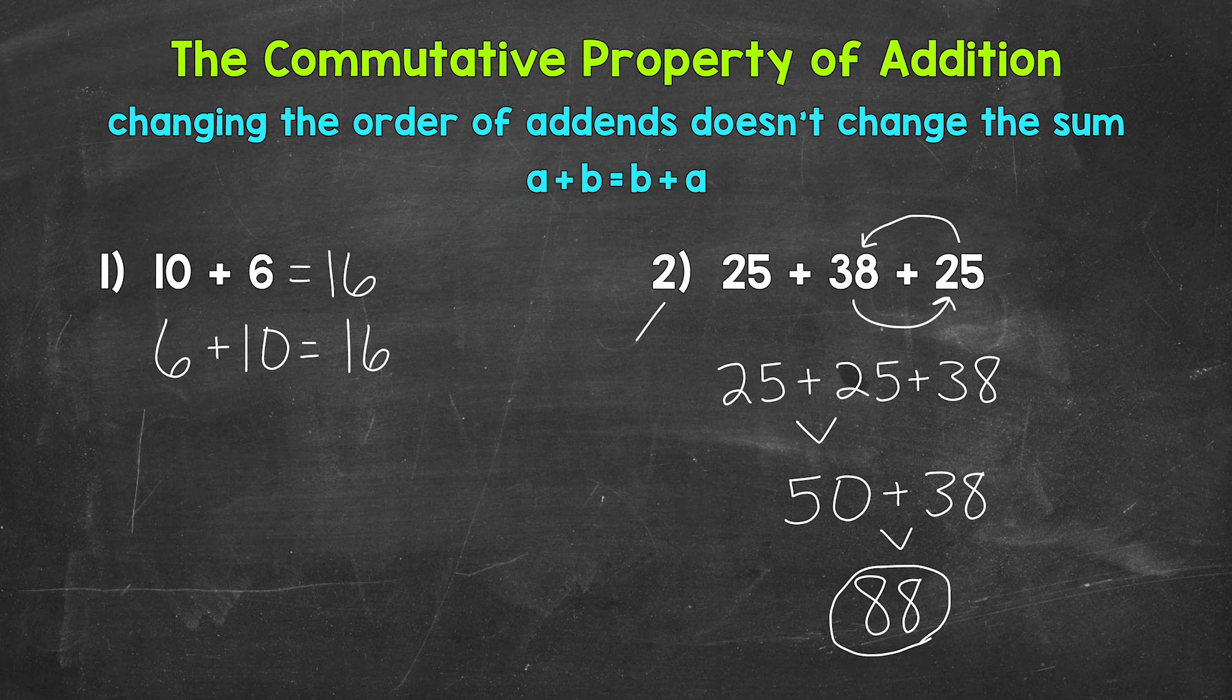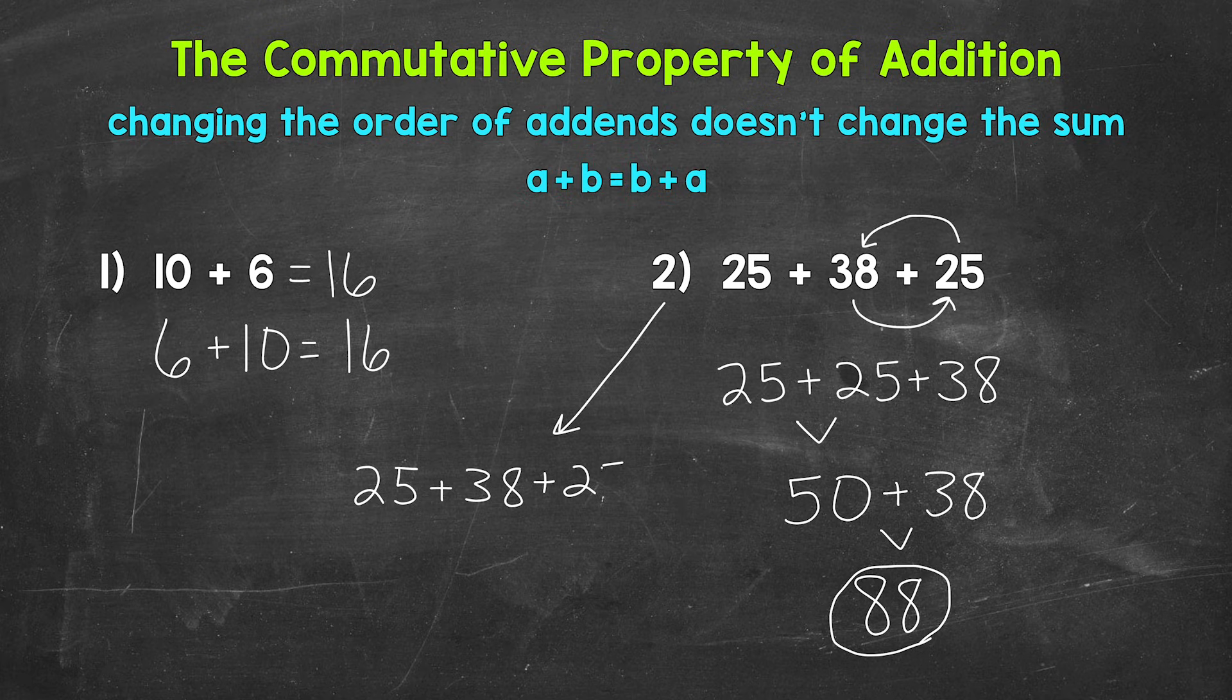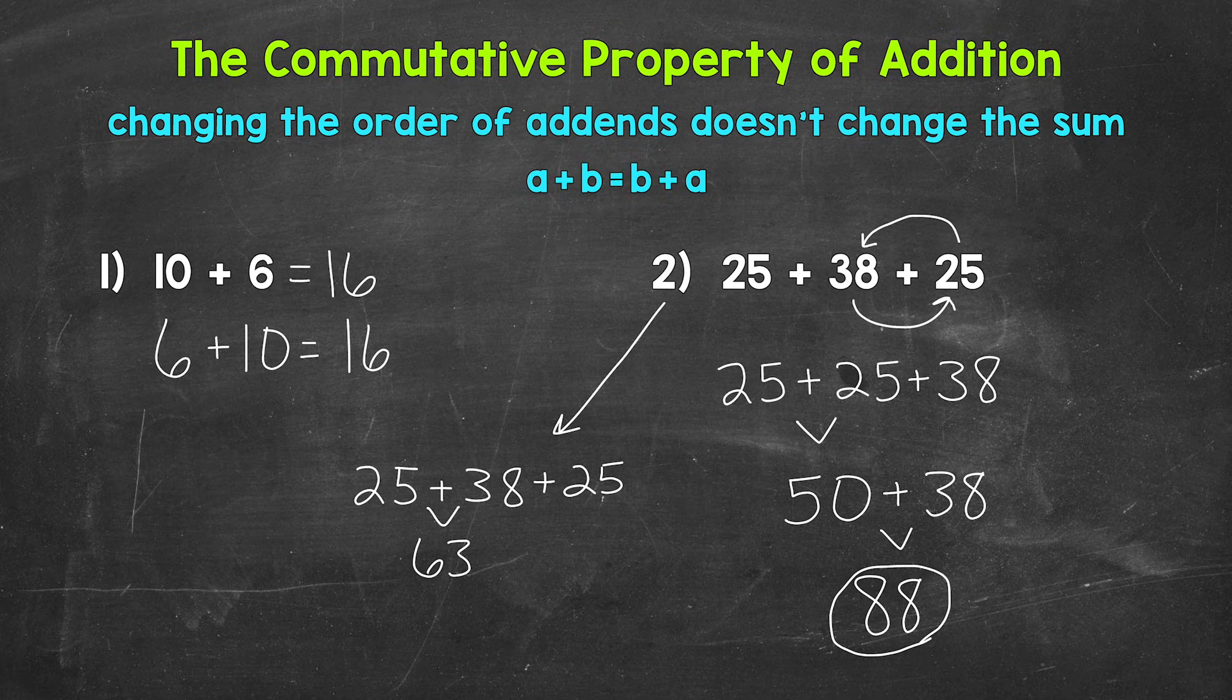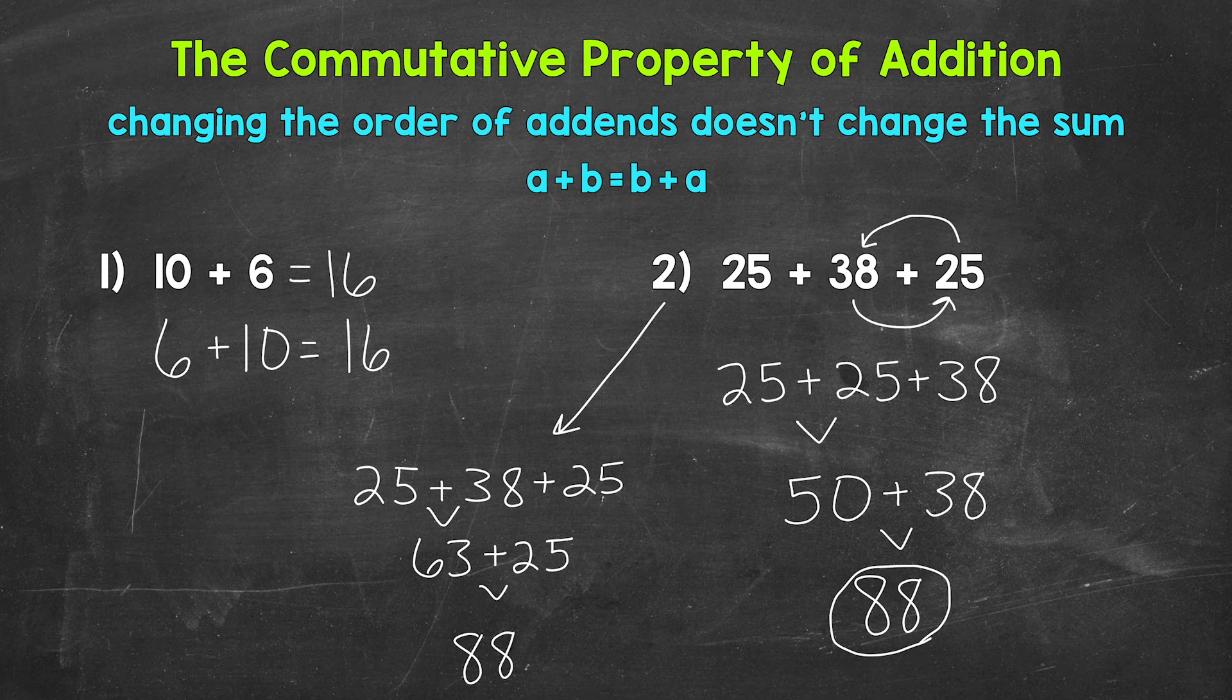Now let's double check that we still would have gotten 88. So 25 plus 38 plus 25. Let's work from left to right, starting with 25 plus 38, which equals 63. Bring down the addition sign and the 25 we have not used. 63 plus 25 equals 88. We get 88 that way as well.